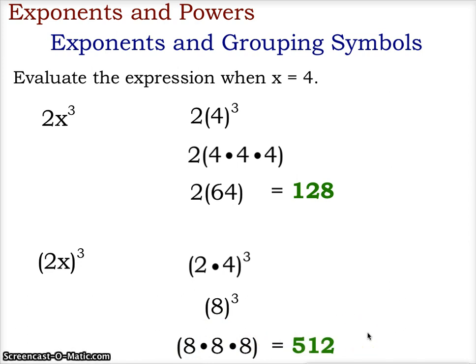8 times 8 being 64, and 64 times 8 being 512. Again, in this situation, the cube, or the 3 exponent, is applied to both the 2 and the x, and we get an answer of 8 cubed being 512.